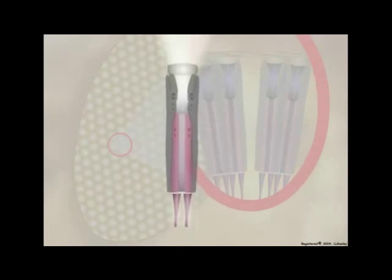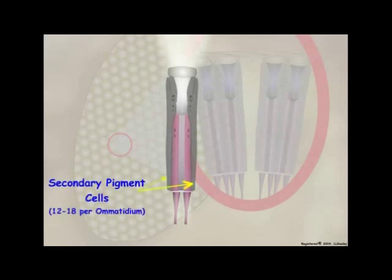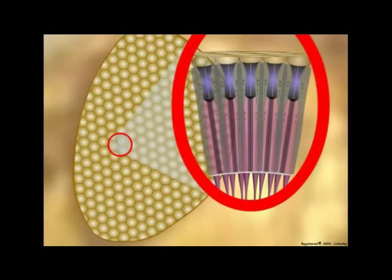Light entering the cornea and cone of an ommatidium is focused on and detected by visual pigments embedded in the rhabdomere membrane. Secondary pigment cells allow each ommatidium to be functionally isolated from its neighbors. Ommatidia sit on a basement membrane in the retina, and axons from the retinula cells combine below the membrane to form the optic nerve that leads to the protocerebrum of the insect.